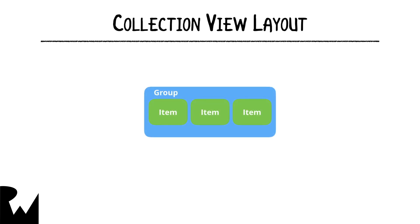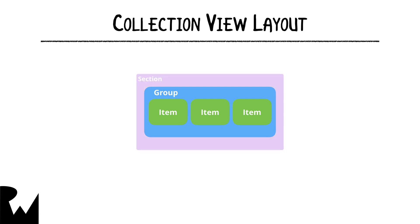Items live inside of a group. Where an item is a basic unit of data, a group is a basic unit of layout. Groups specify the direction in which data is laid out, and can be composed together to create more complex layouts.